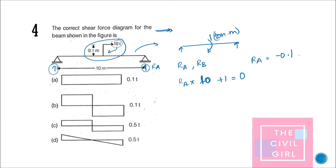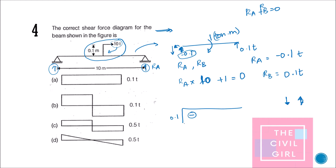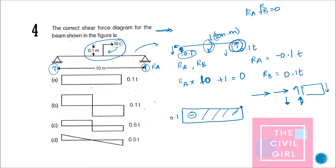RA works out to minus 0.1 ton, and since RA plus RB equals zero (no vertical external loads), RB equals 0.1 ton. Drawing the shear force diagram: since RA is negative (downward), we start at minus 0.1. A moment does not affect the shear force diagram — only vertical forces do — so it remains constant at minus 0.1, then at RB it returns to zero. The answer is option A.